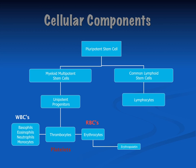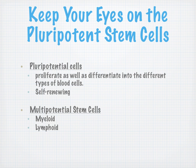There's a slide showing the pluripotent stem cell. A pluripotent stem cell breaks into a myeloid multipotent stem cell or a common lymphoid stem cell. That myeloid multipotent stem cell goes down to a unipotent progenitor cell, which can turn into white blood cells, thrombocytes, and erythrocytes. On the lymphoid line, we only see lymphocytes. The pluripotent stem cells proliferate as well as differentiate into the types of blood cells in our bodies, and they're self-renewing.